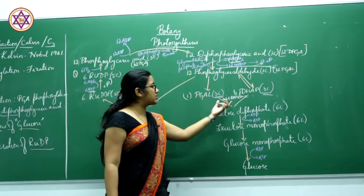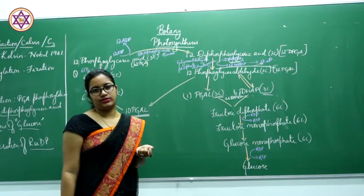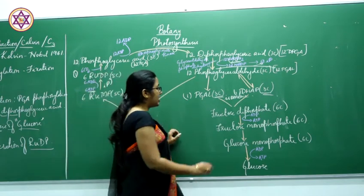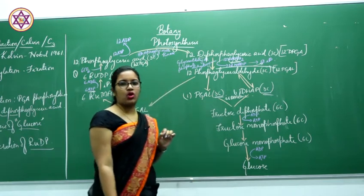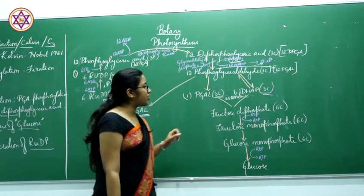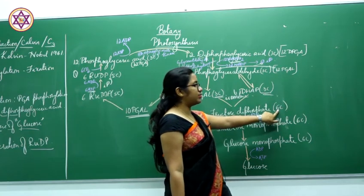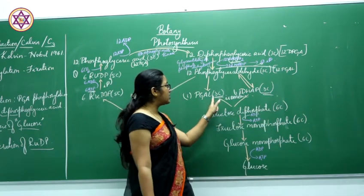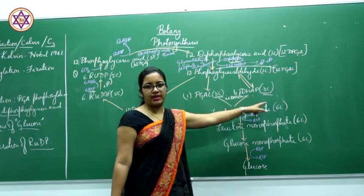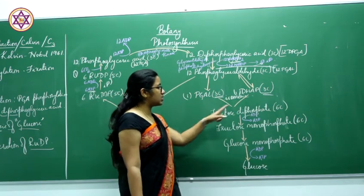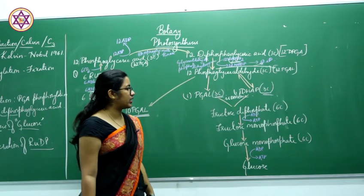These isomeric compounds will combine: one PGAL (3C) and one DHAP (3C) combine to form fructose diphosphate, which is a 6-carbon compound — 3 carbons from PGAL and 3 from DHAP.